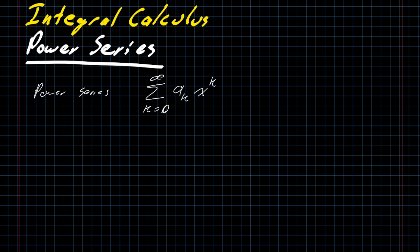But if we just list out the first couple of terms, we will have a naught times x to the 0, which is just a naught, then we'll have a1 times x, and then we'll have a2 times x squared, and so on.